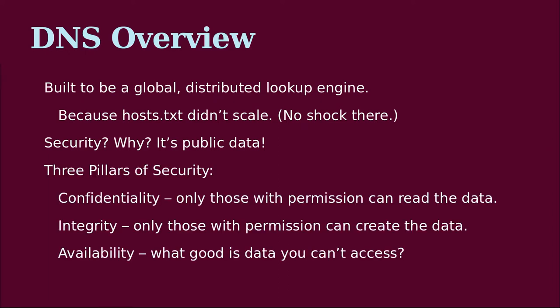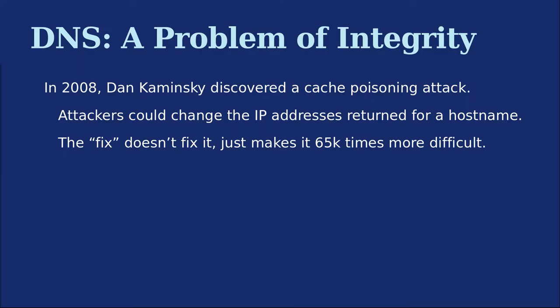The problem is there are three pillars of security. Confidentiality — only those with permission can read something. Integrity — only those with permission can create or modify data. For example, the weather service can write weather forecasts but no one else can, even though anyone can read them. And installing libc on your Linux machine — every application should be able to read it, but only root should ever update it. And of course, availability — what good is data that you can't access? The problem we had was a problem of integrity with DNS.